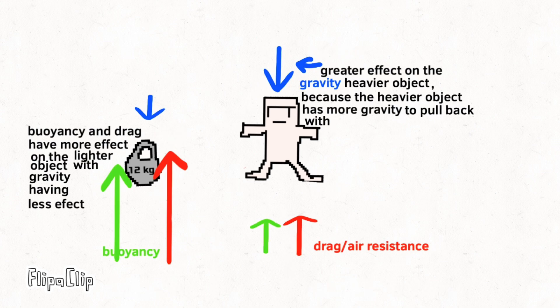With heavier objects, gravity has more effect, and thus it takes more time for gravity and drag to equalize, resulting in equilibrium.